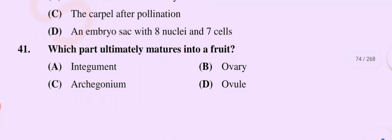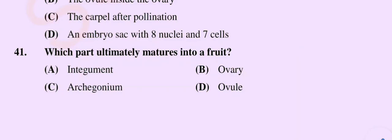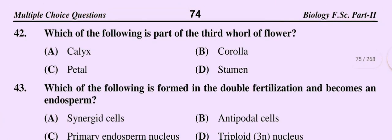Question number 41: Which part ultimately matures into a fruit? Option A integument, option B ovary, option C archegonium, option D ovule. The correct option is option B: ovary.